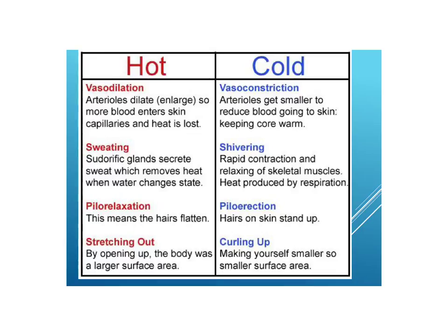Here's a summary: if it's hot, we have vasodilation, sweating, pilorelaxation which means the hairs on your body flatten, and behaviors such as stretching out — increasing your surface area actually cools the body. If you're cold, there's vasoconstriction, shivering, piloerection — we're talking about goose bumps, where the hairs on your skin stand up. If you're an animal covered in fur that warms you up. And then curling up, making yourself smaller with a smaller surface area, which warms you up.